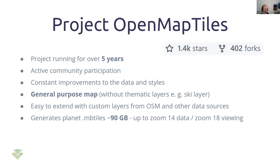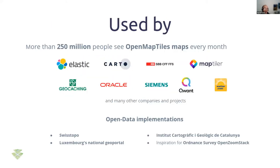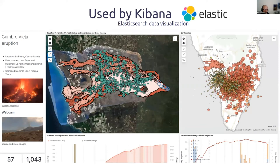There are talks about extending it to zoom 15 and making it more precise and crisp, especially useful for city dwellers. It's used by numerous companies, including Elastic. Elastic's Kibana is a data visualization tool where we visualize billions of data points, and it would not be possible without OpenMapTiles. The tiles on the right are generated by the OpenMapTiles project, and that's why Elastic is an active contributor. This is a demo showing the Cumbre Vieja volcano eruption that was happening in the Canary Islands not too long ago.